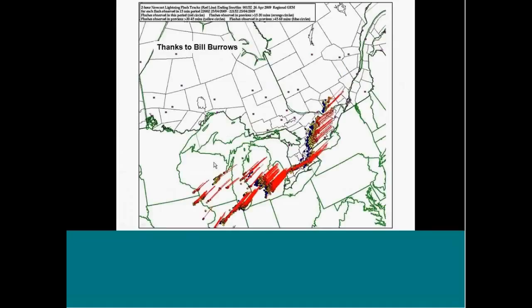I wanted to just show this. This is our lightning map. Bill Burrows produces this from the lightning arrays that are out there. And then he forecasts where the lightning is going to go based on NWP information, the red line here indicates where that lightning is projected to go in the next two hours.